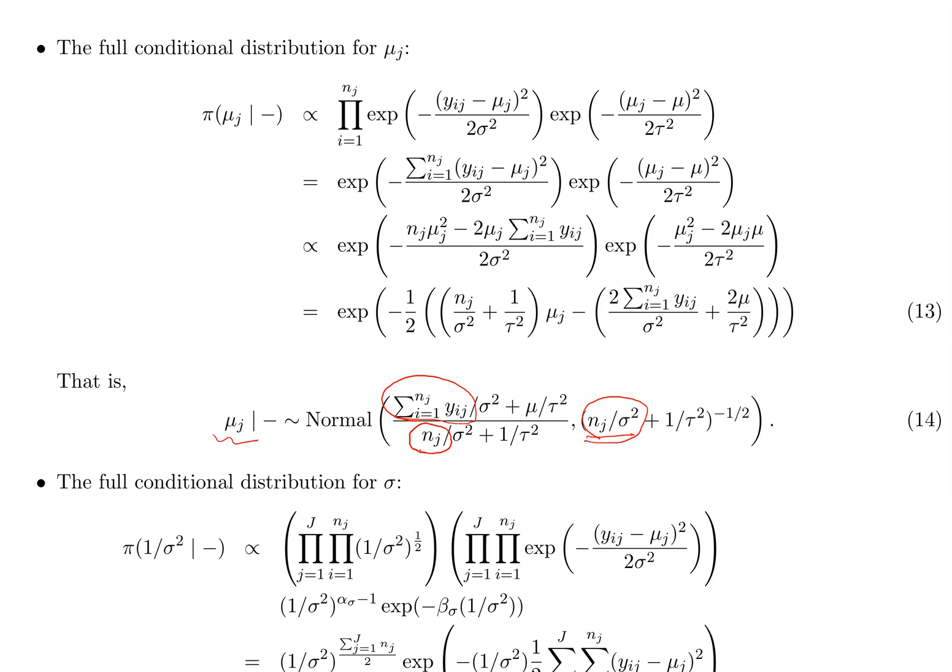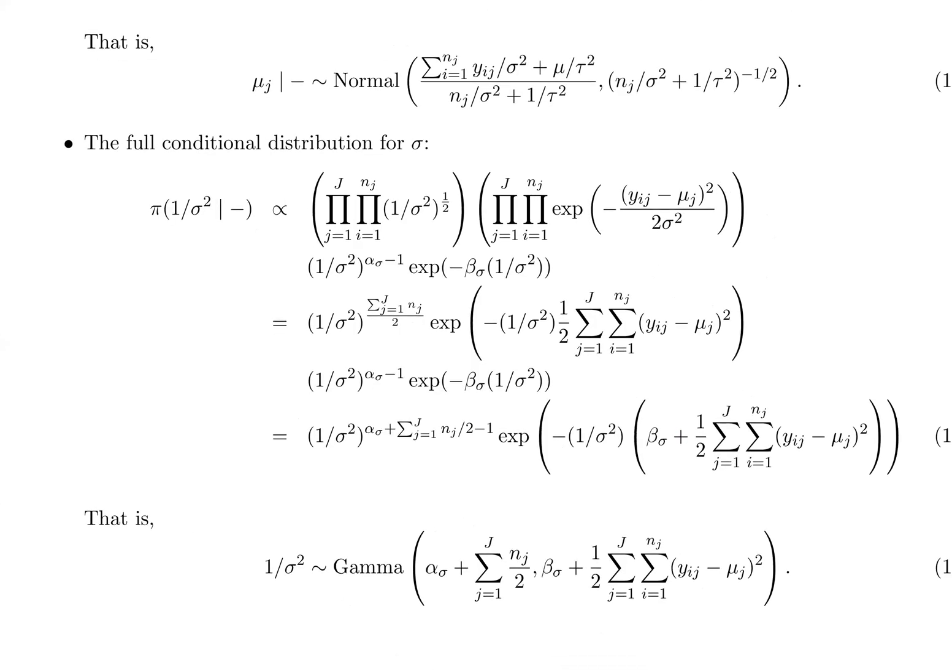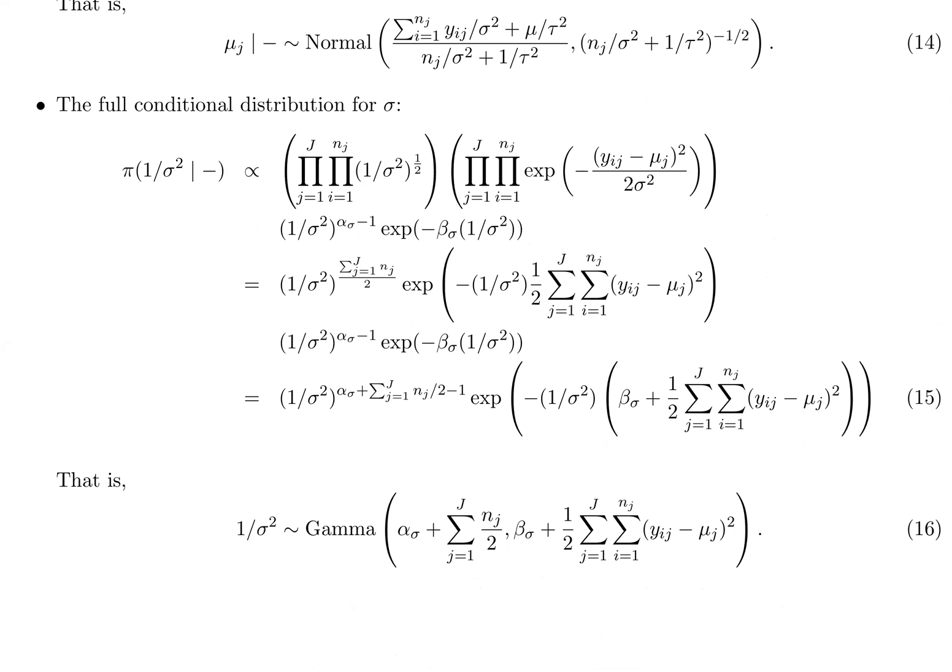Let's look at the case for sigma. Equation 15 shows the derivation, and equation 16 is the final full conditional posterior distribution. We know it's a gamma. Sigma is in the likelihood and is being shared across all groups—it's the same standard deviation parameter for y_ij within each group.